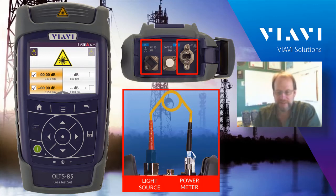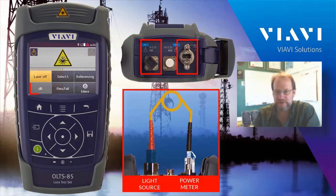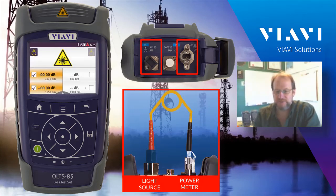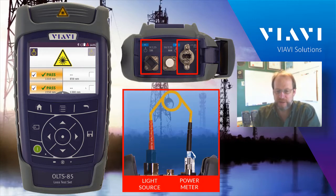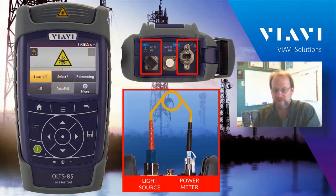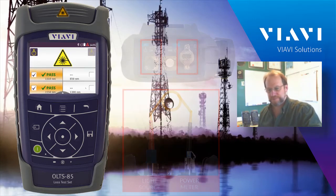I am currently in dB mode. If I press the button, I can toggle between dB and pass-fail. If I go to pass-fail mode, now it's going to show me not the values, but whether it passed or failed based on those limits I had set. I can toggle back and forth on that. I'm going to go back to dB mode.